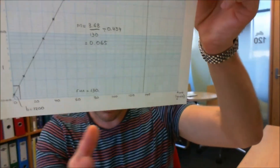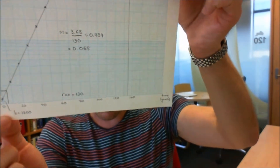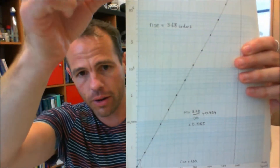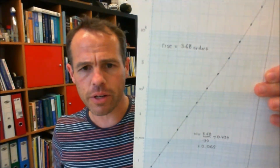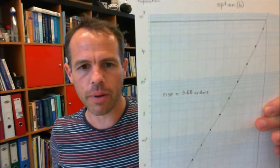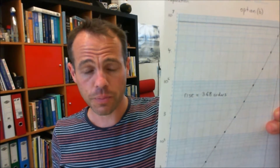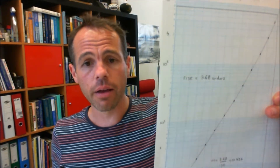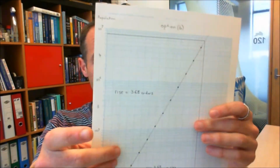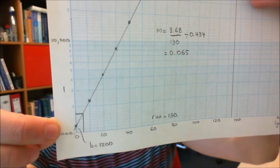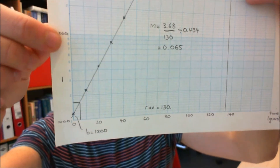A somewhat better way to do it, especially with large data sets, is to use log-linear paper. You have a linear scale across the bottom and a log scale on the left-hand side. The main reason I like log-linear paper is that you no longer have to calculate the log of all the numbers in your data set — the graph does it for you.